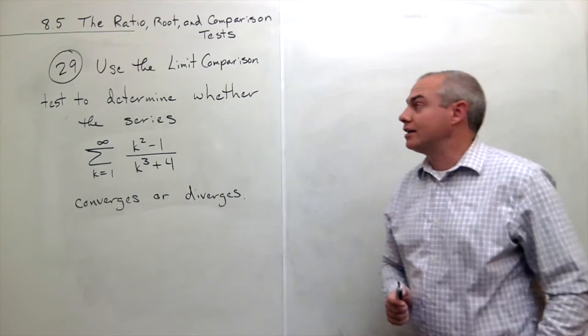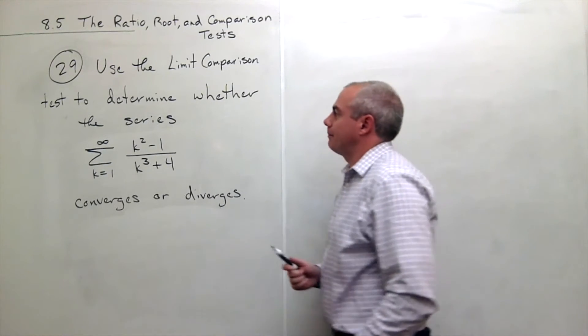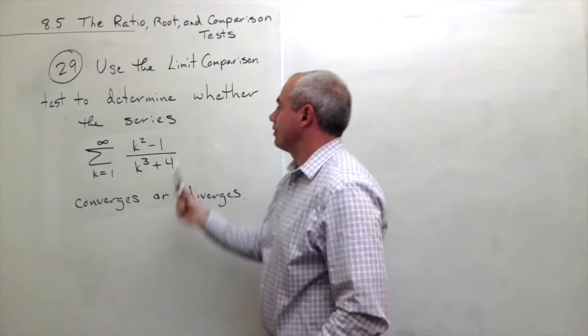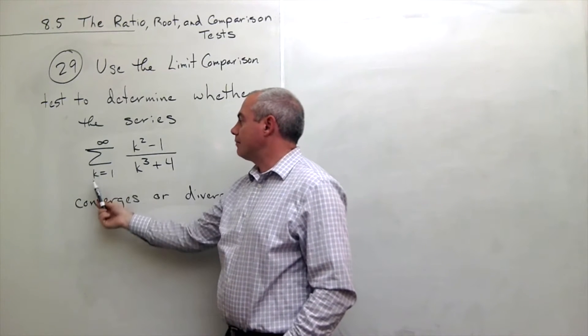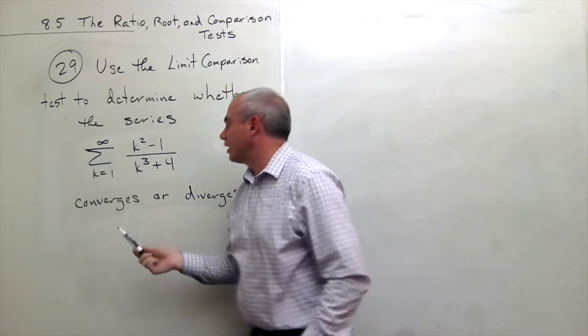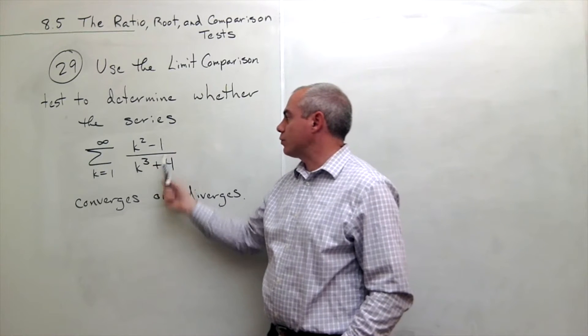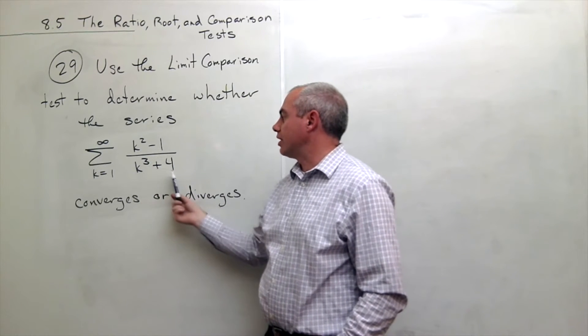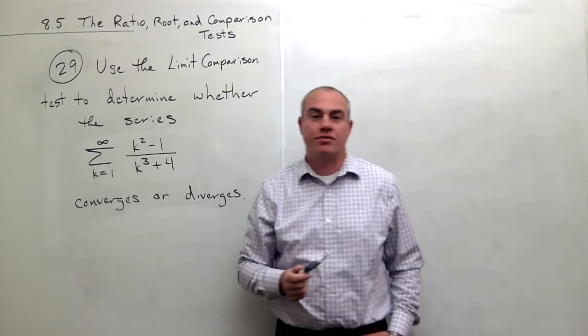In problem number 29, I'd like to use the limit comparison test to determine whether the series sum k going from 1 to infinity of k squared minus 1 over k cubed plus 4 converges or diverges.